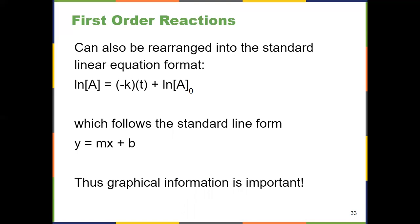The integrated rate law for a first-order reaction meets the linear equation format Y = MX + B. Natural log of concentration of A equals negative KT plus natural log of the initial concentration. The Y-axis is the natural log of concentration of A at time T, the Y-intercept B is the natural log of the initial concentration, the slope is negative K, and the X variable is time T. Graphical information gives us a lot of information about kinetics.